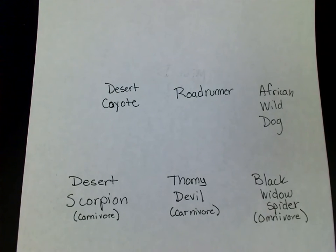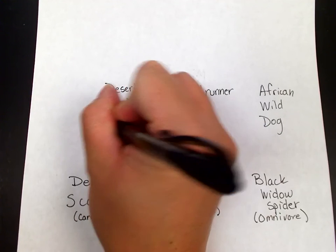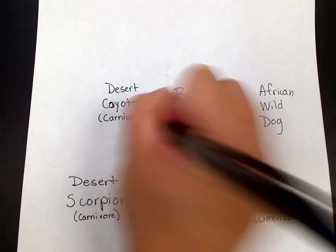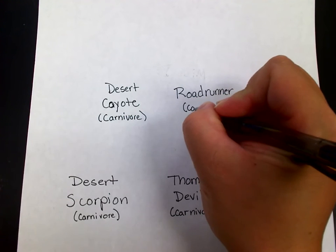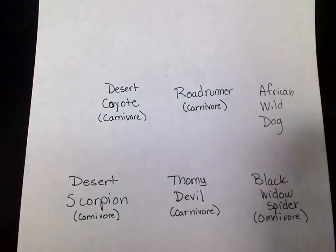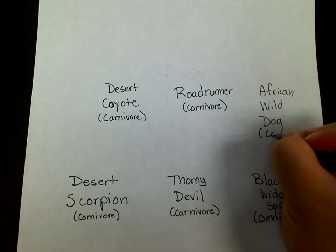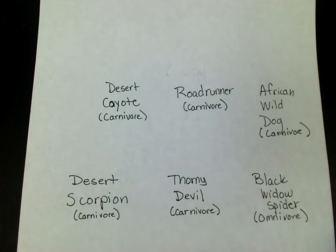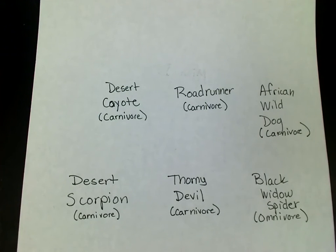Now I have my organisms. The next step is to create the arrows for my food web. I also have to make sure I list my energy roles underneath each organism. The African wild dog is a carnivore. Not only did I have to find the organisms that live in that ecosystem, I also have to find out what specific items each organism eats.